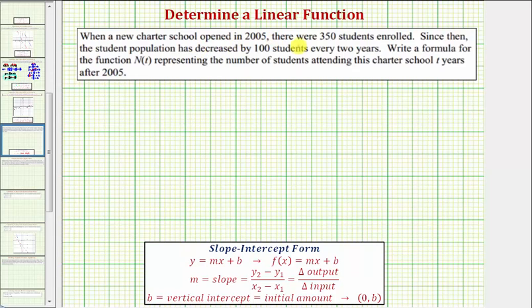When a new charter school opened in 2005, there were 350 students enrolled. Since then, the student population has decreased by 100 students every two years. We're asked to write a formula for the function n(t), which would be a linear function, representing the number of students attending this charter school t years after 2005.